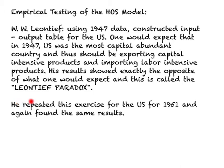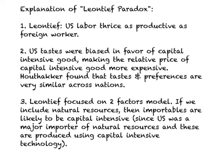Leontief repeated this exercise for 1951 data as well and again found the same result — that the U.S. was exporting labor intensive products and importing capital intensive products, though it happened to be the most capital abundant country in the world. The first attempt to resolve the Leontief Paradox came from Leontief himself. According to him, U.S. labor was thrice as productive as a foreign worker in 1947. But what other economists found is that not just labor, but also capital was more productive in the U.S. relative to the rest of the world, and hence this could not resolve the Leontief Paradox.